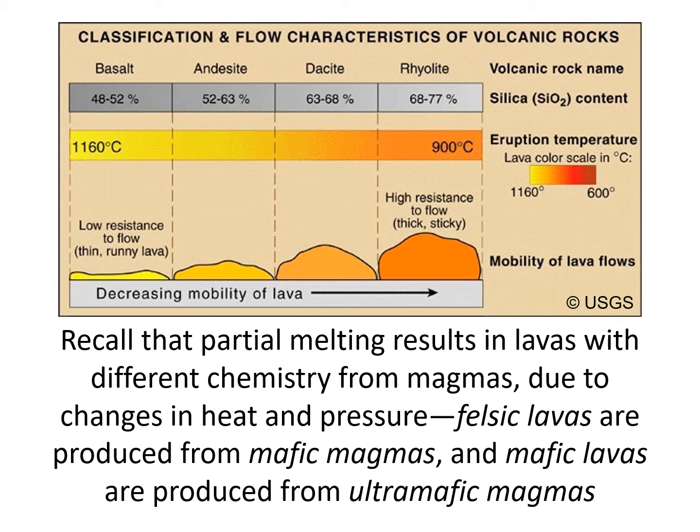The greater silicate content of felsic lavas causes differences in how the lava will flow. The chemistry of lava is important not only for the temperature at which it erupts, but also for the resistance to flow — the viscosity of that material. At different boundary points, such as decompression melting versus flux melting, you get different types of minerals and different types of extrusive igneous rocks from those flows.